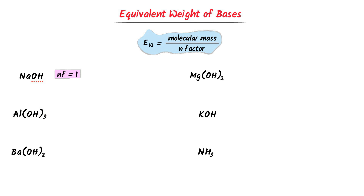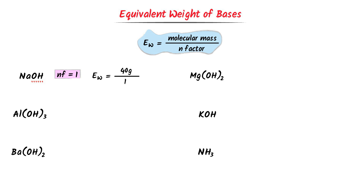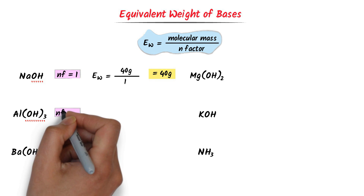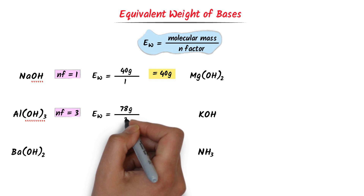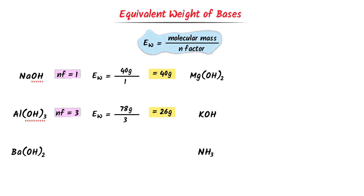Its equivalent weight is equal to molecular weight upon N factor. The molecular weight of sodium hydroxide is 40 gram upon its N factor which is 1. I get 40 gram. So the equivalent weight of sodium hydroxide is 40 gram. In case of aluminium hydroxide, we can see that there are 3 hydroxide ions. So the N factor of aluminium hydroxide is 3. Its equivalent weight is equal to the molecular weight of aluminium hydroxide, which is 78 gram, and its N factor is 3. I get 26 gram. So the equivalent weight of aluminium hydroxide is 26 gram.